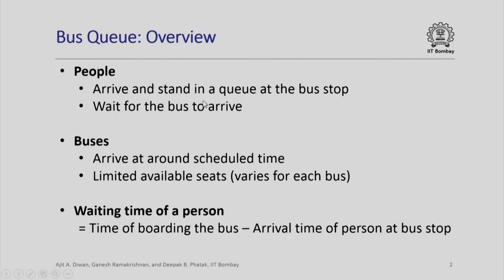People will arrive and stand in a queue at the bus stop. They will wait for the bus to arrive. Note that in actual practice people will arrive at random times. Similarly, buses will arrive at around the scheduled time, not necessarily exactly at the scheduled time. So there is some randomness involved. In this illustration we are not going to use any random number generator to simulate the actual bus queue — we are just trying to illustrate how bus queues are handled in a C++ program.